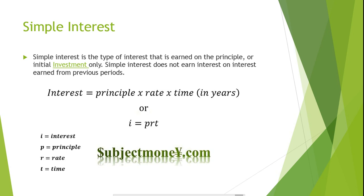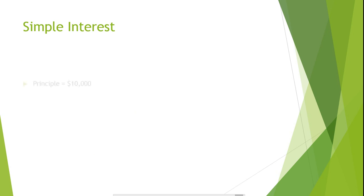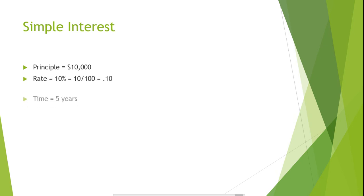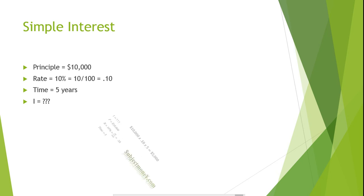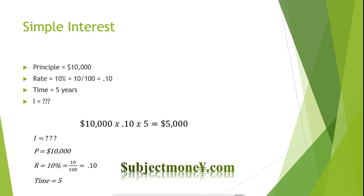Let's try a word problem. Suppose Jason borrowed $10,000 from the bank at a simple interest rate of 10% and was to pay the loan back over five years. How much interest would Jason pay for this loan? Let's plug in our figures to the simple interest formula to solve for the total amount of interest that he paid.